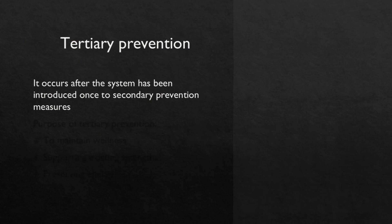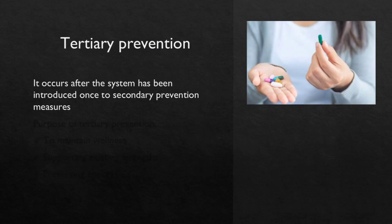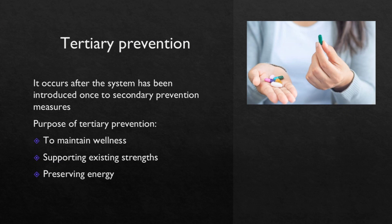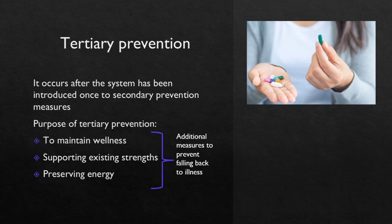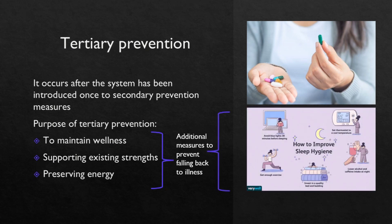Next is tertiary prevention. It occurs after the system has been introduced once to secondary prevention measures. The purpose of tertiary prevention is to maintain wellness or protect the client system reconstitution by supporting existing strengths and preserving energy. That means, after I started taking treatment, I will take additional measures so that I don't fall back to illness again. Like in secondary I was taking medicines to regulate my sleep, now in tertiary I will avoid sleeping during daytime, try to maintain a calm and cool environment before sleeping, take some hot milk, cut out on alcohol, and follow a fixed exercise routine throughout the day. All these are my tertiary interventions.